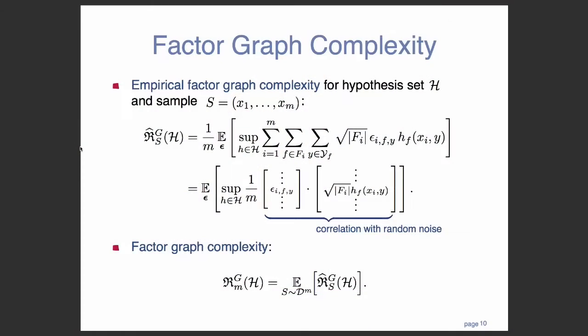And we're able to quantify this by defining a notion that we call factor graph complexity. So if you're familiar with standard learning theory, you've probably seen or heard of something called the Rademacher complexity for binary classification. And what we did here was we basically extended that to the structure prediction problem. And factor graph complexity, just like Rademacher complexity, is just measuring the correlation with random noise of your hypothesis set. Except here, we have this extra square root of fi term, because we're weighting different examples based off of how large of a factor graph they have. And then, like with Rademacher complexity, we have an empirical version and we can have an expectation version.